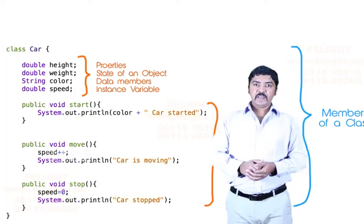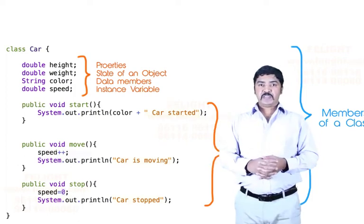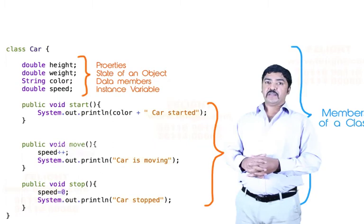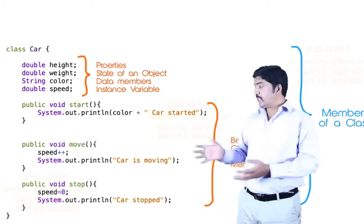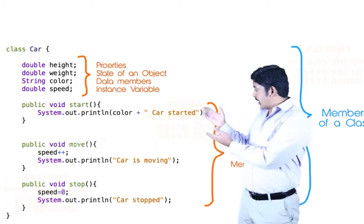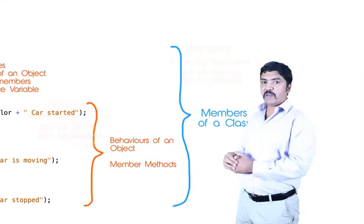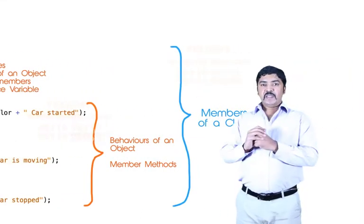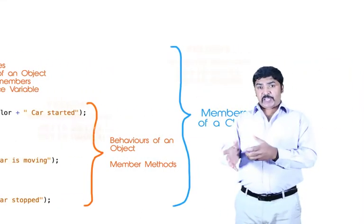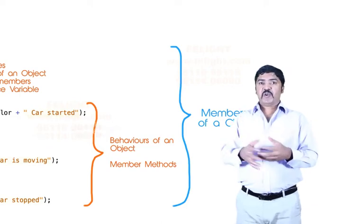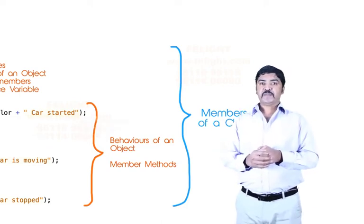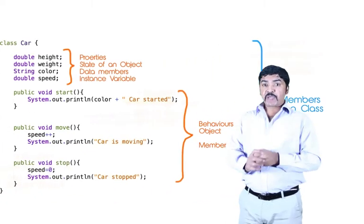We call them behaviors. Behaviors can also be called member methods. Now, we can also use a term like action, because a behavior is more like an action or a combination of actions. But when you say members of a class...